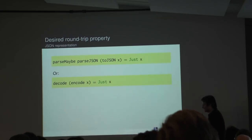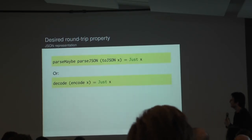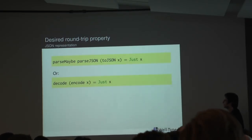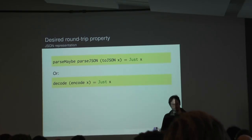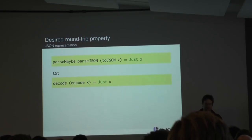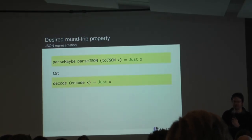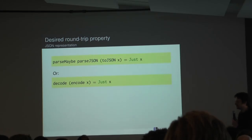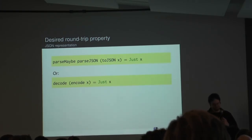There's more. It's not just that we have to write this code, but there is a desired property — a law we would like to hold — which says that if we take a Haskell value, convert it to JSON, and then parse it back, we would like to have the same original Haskell value. So we have to write code that more or less expresses the same thing and also ensures this roundtrip property holds.